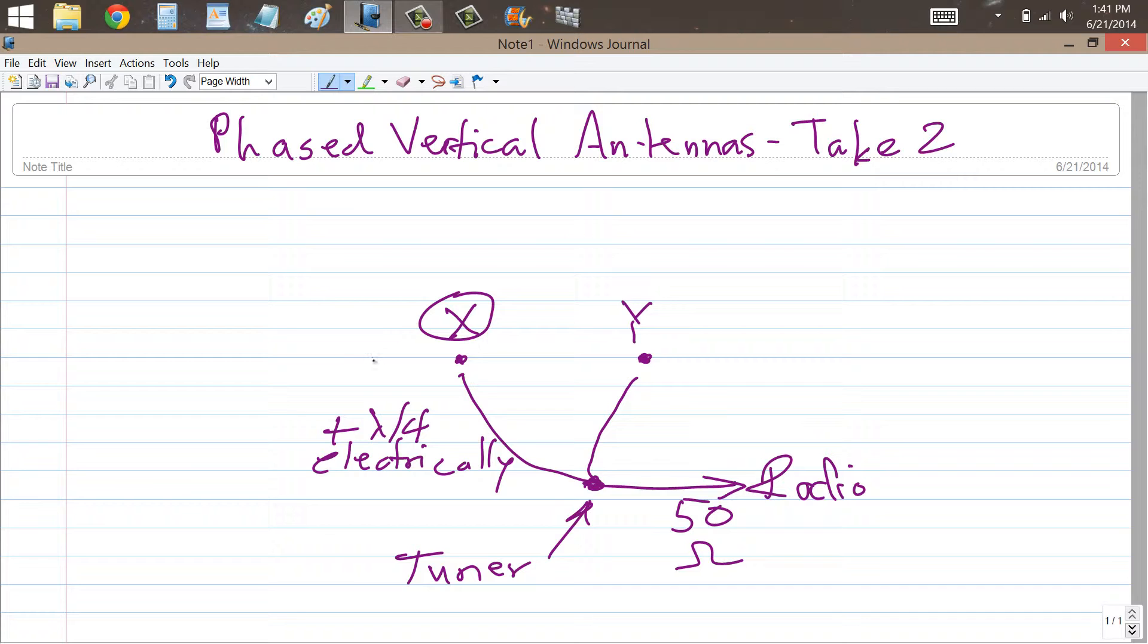And when you do that, you're going to get an interesting state of affairs. This antenna is going to lag this one by 90 degrees. That is to say, the phase of the signal that goes into antenna X is going to be 90 degrees or a quarter of a cycle behind the signal that goes into Y.